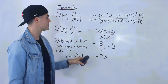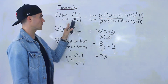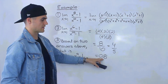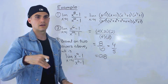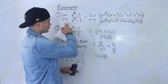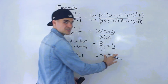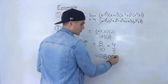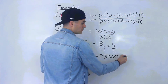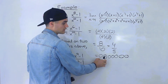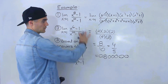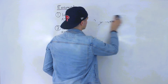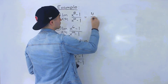Because the answer is a decimal, if you use a table of values approaching 1 from the left and right, you want numbers really close to 1. Picking values like 0.9 or 1.1 won't give a clear pattern, but the closer you get to 1, zeros will form and it becomes obvious the limit approaches 0.8. The factoring method gives 0.8 directly. So the answer to the first limit is 4 over 5, or 0.8.